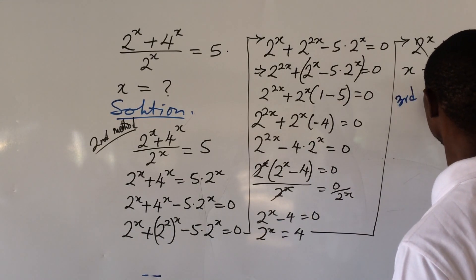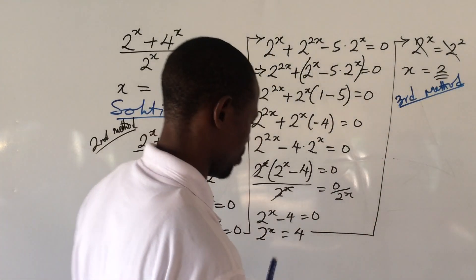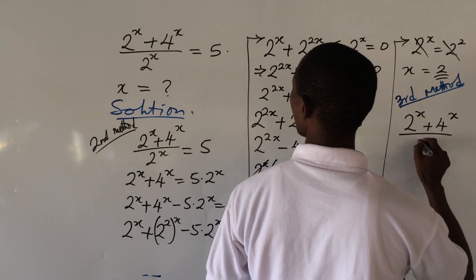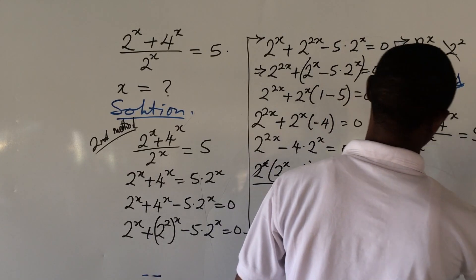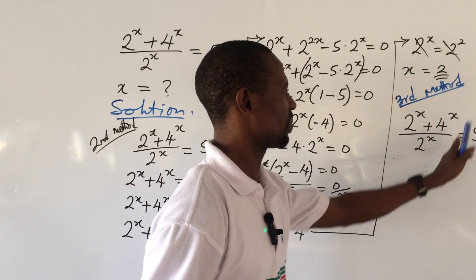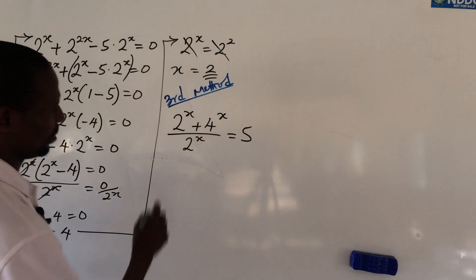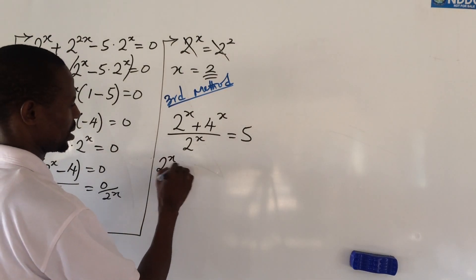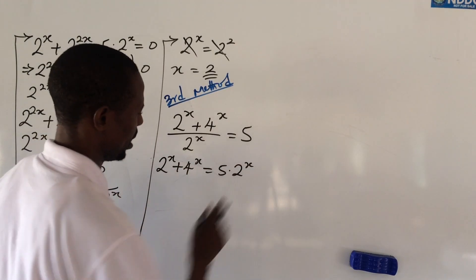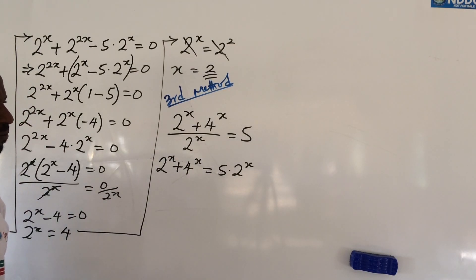For the third method, we put down our equation: (2^x + 4^x) / 2^x = 5. We eliminate the denominator by multiplying through by 2^x, giving us 2^x + 4^x = 5 · 2^x.